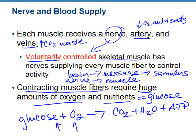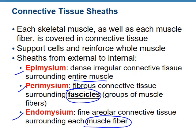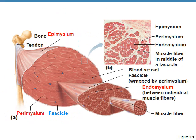Each skeletal muscle is covered in connective tissue. We look at the whole muscle, then break it down into fascicles, and then each muscle fiber cell. The connective tissue sheaths are called epimysium, perimysium, and endomysium. Knowing your prefixes: MYS has something to do with muscle. Epi means upon, peri means around, and endo means inside.